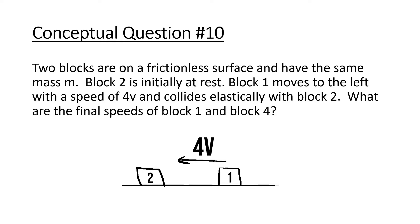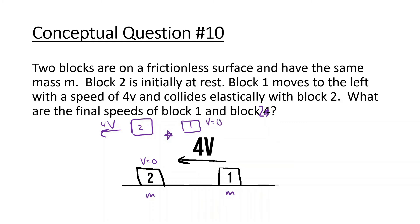Next problem: two blocks on a frictionless surface have the same mass M. Block 2 is initially at rest. Block 1 moves to the left with a speed of 4V and collides elastically with block 2. Since they have the same mass in an elastic collision, they switch velocities. After the collision, block 2 will be moving at 4V and block 1 will stay still. You may have seen this in pool — when one ball hits another, the first ball stops and the second takes its speed, because pool collisions are fairly elastic.